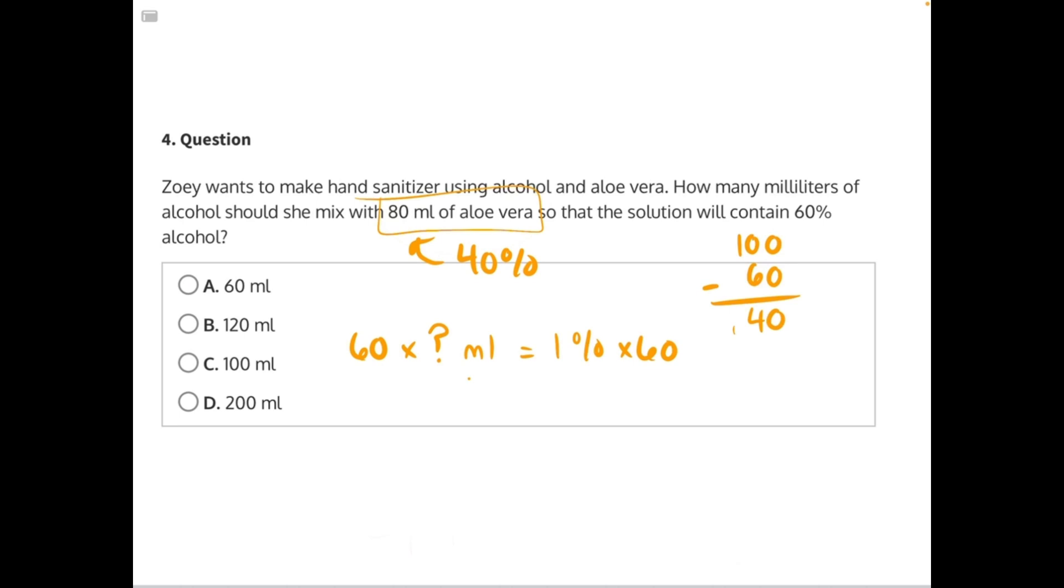So let's try to set up a ratio. If 80 milliliters is 40% of the solution, what, so x, unknown variable, is 1% of the solution?